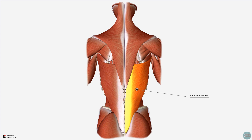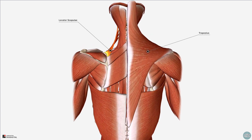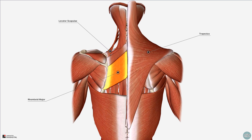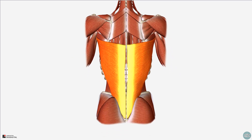The other superficial extrinsic back muscles are the trapezius, levator scapulae, rhomboid major, and rhomboid minor. The name latissimus dorsi comes from the Latin — latissimus meaning the broadest, and dorsi referring to the back — so the largest muscle of the back.